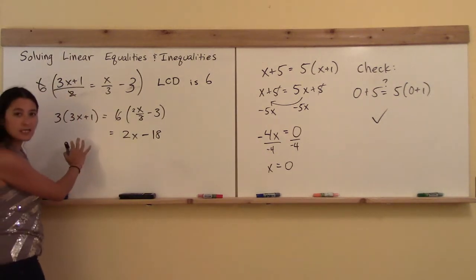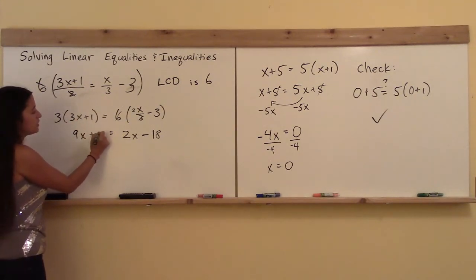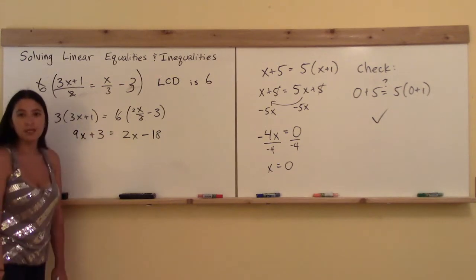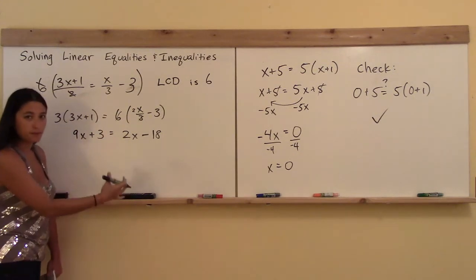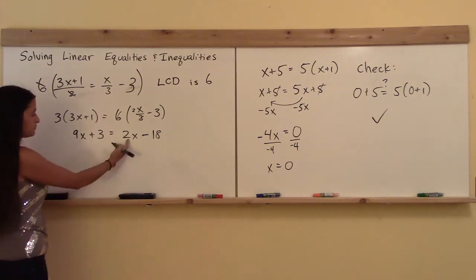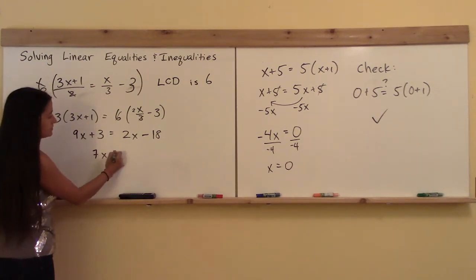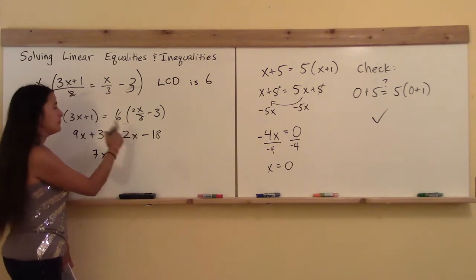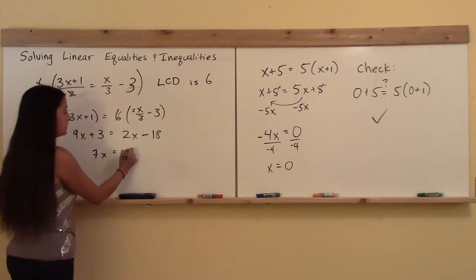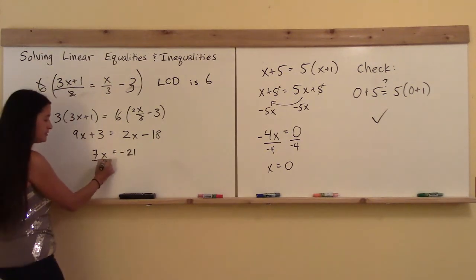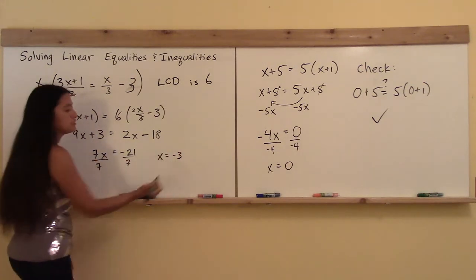Over on the other side, very carefully factoring through each term, I get 9x plus 3. Now I've got myself in a situation where I want all the x's on one side and all the numbers on the other. So I'll bring things over: 9x minus 2x gives me 7x. Negative 18 minus another 3 is negative 21. So I've got negative 21 on that side, and then dividing both sides by 7 tells me that x is equal to negative 3.